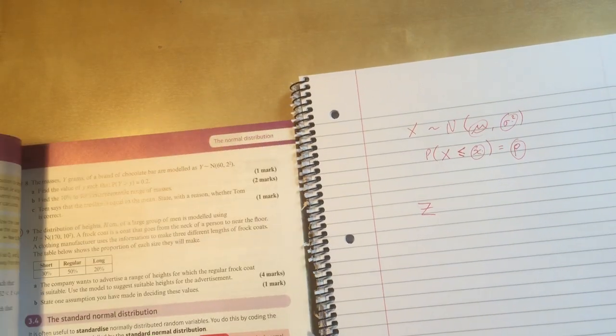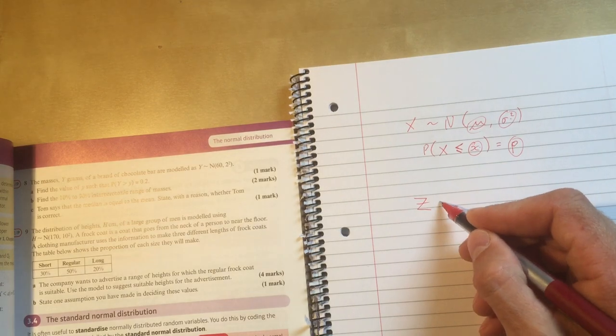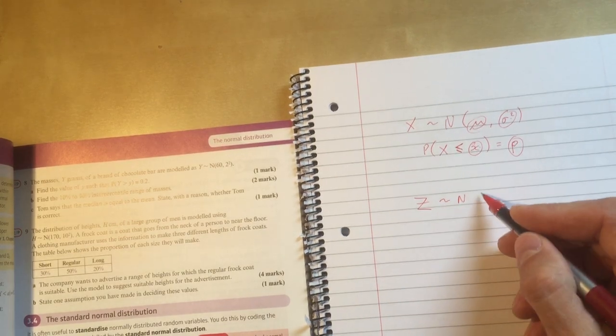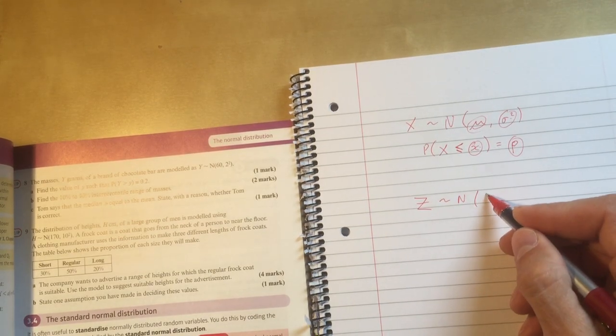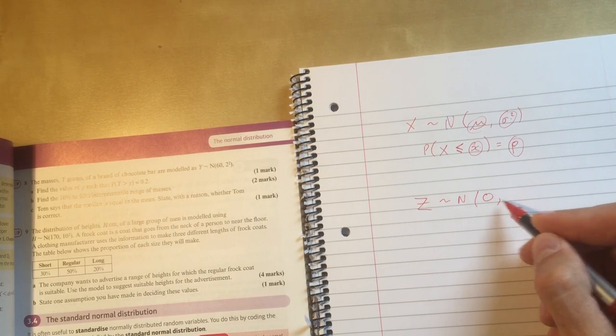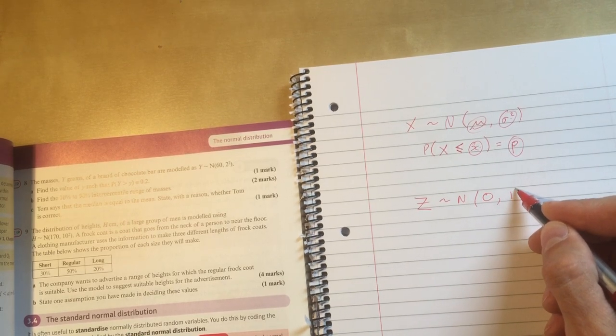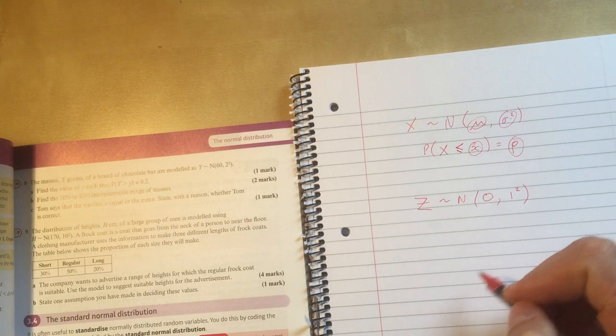So what is z? Well, z is the normal distribution. It's a normal distribution like any other, except it's a special one. It's the one with mu is zero and sigma is one.